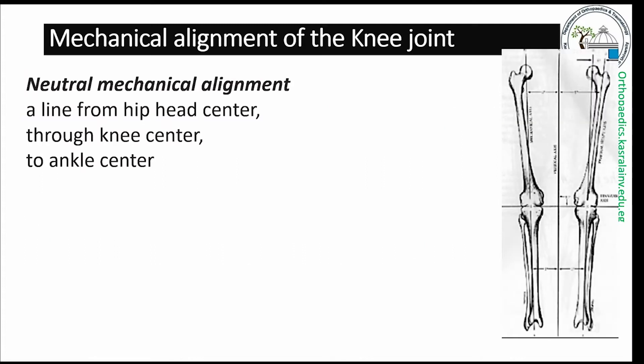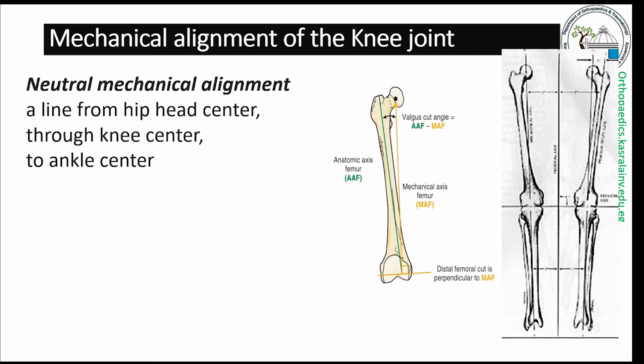Neutral alignment of the limb is obtained if a line drawn from the center of the femoral head to the center of the ankle joint passes through the center of the knee. Due to the inclination of the femoral bone, it has two axes.